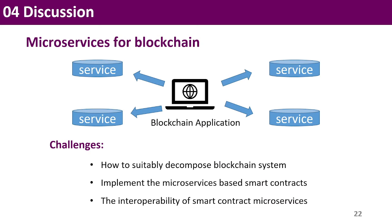The next implication is microservices. Nowadays, organizations migrate their crucial applications to the cloud. Microservices can decompose these applications into small services within a single business domain. Each microservice can be deployed, developed, and scaled independently by a small team. We can also try to decompose the blockchain system into small services to deliver digital products faster and simplify application maintenance. But there are still problems to solve, like how to suitably decompose the blockchain system, how to implement microservices based on smart contracts, and how to address the interoperability of smart contract microservices.